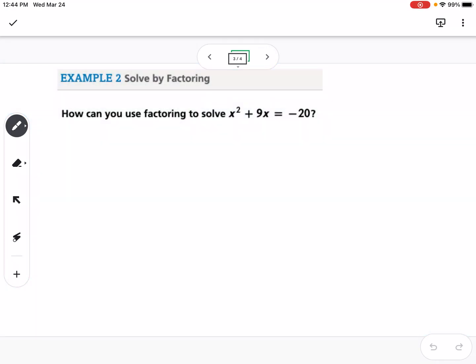The next one is how can I use factoring to solve? The first thing I need to do is make sure that it's all on the same side of the equation. I'm going to rewrite this as x squared plus 9x, and then I'm going to add 20 to both sides, so this would be plus 20 equals zero.